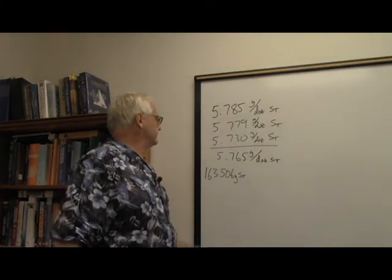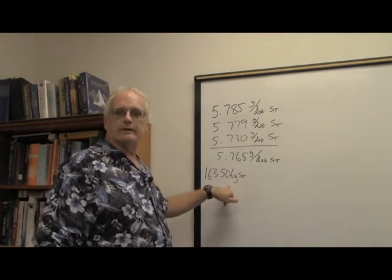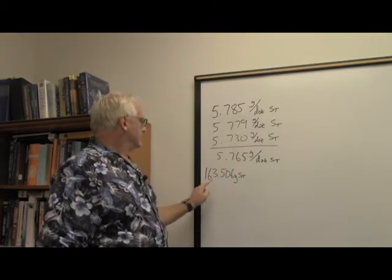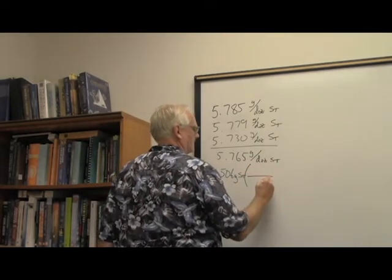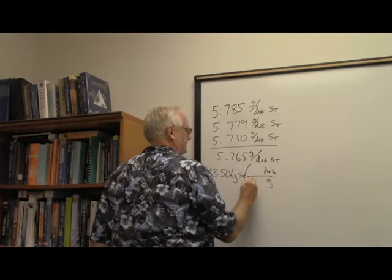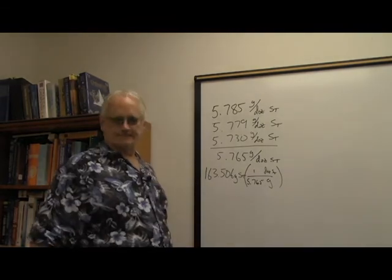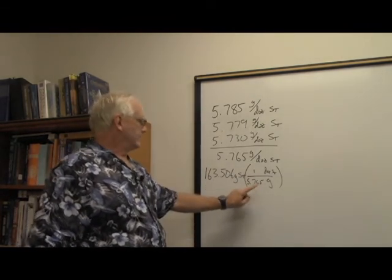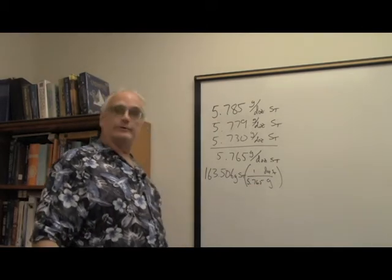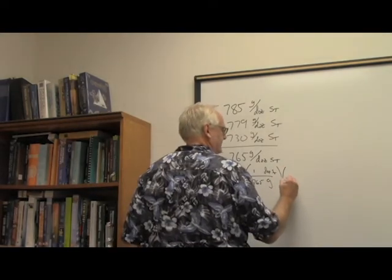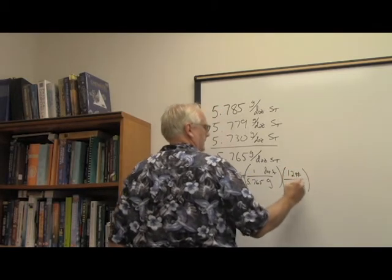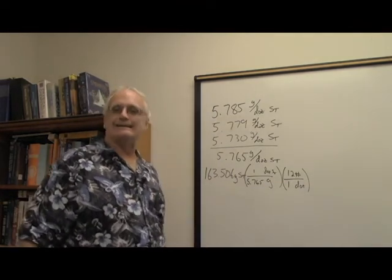We started with 163.506 grams of Smarties. That's what they all weighed after we took out the weight of the Styrofoam container. Now, we know that grams to dozen Smarties, that's going to be 5.765 grams of Smarties per dozen. And that's our measured value. And of course, what we're after is not how many dozen Smarties are in there. We're after the actual number. So, away we go. We just use the definition of dozen.